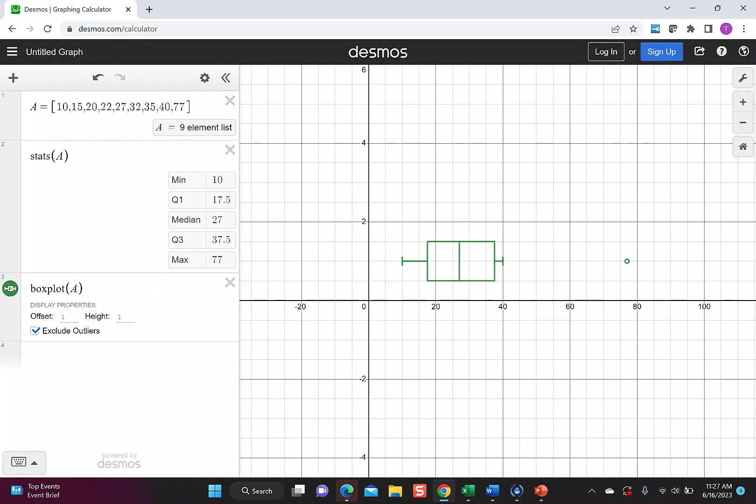Let's talk about the box plot. In the middle, I have a rectangle. The left side of the rectangle corresponds to Q1, 17.5. The right side of the rectangle is Q3, 37.5, and the line in the middle is our median.